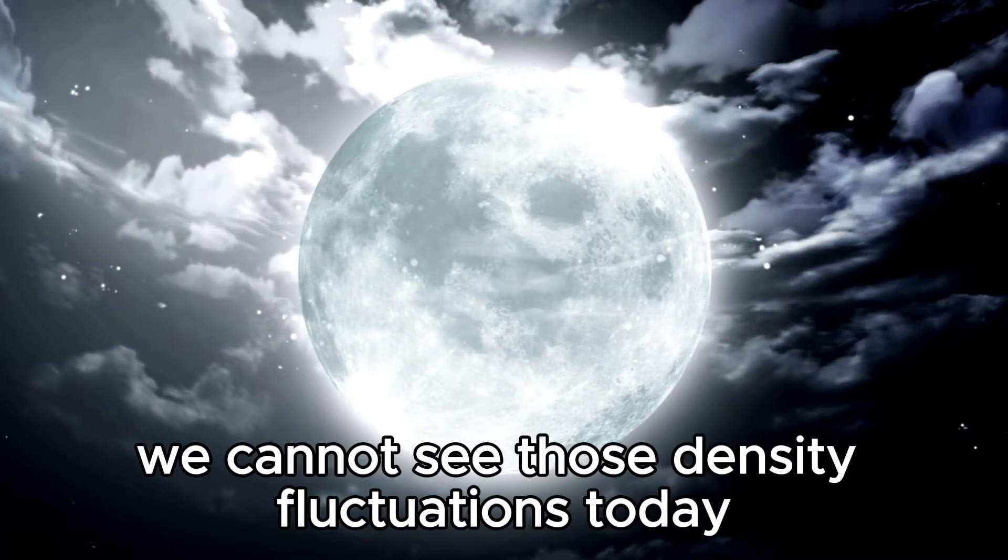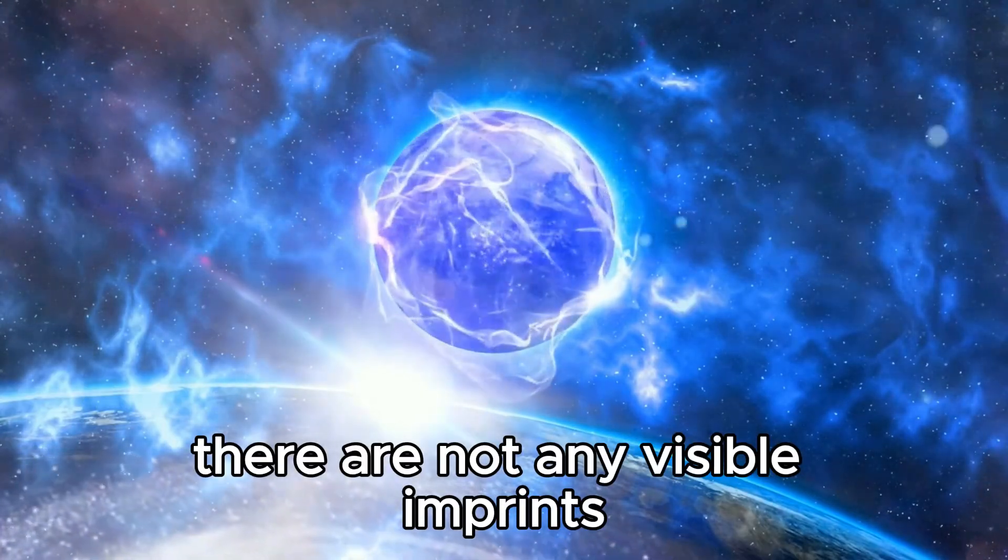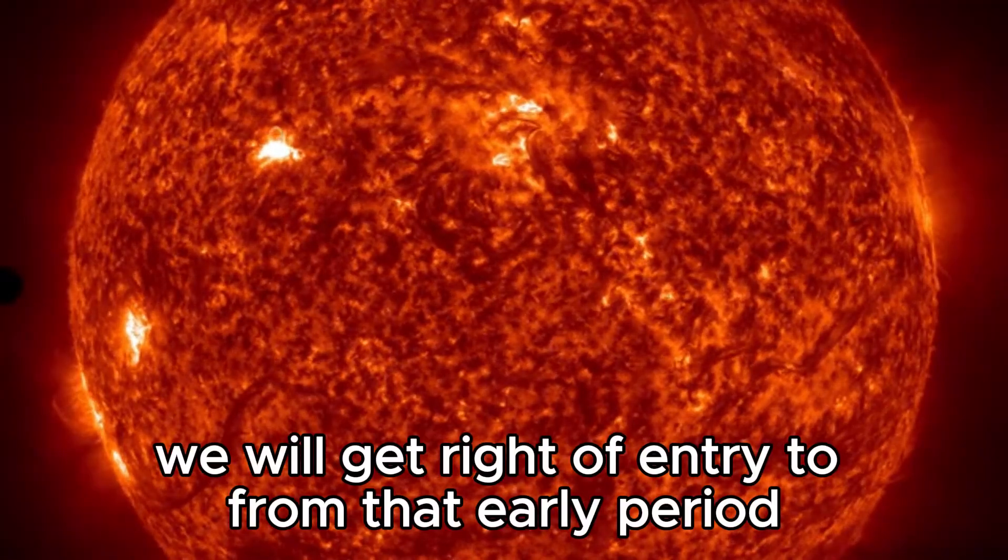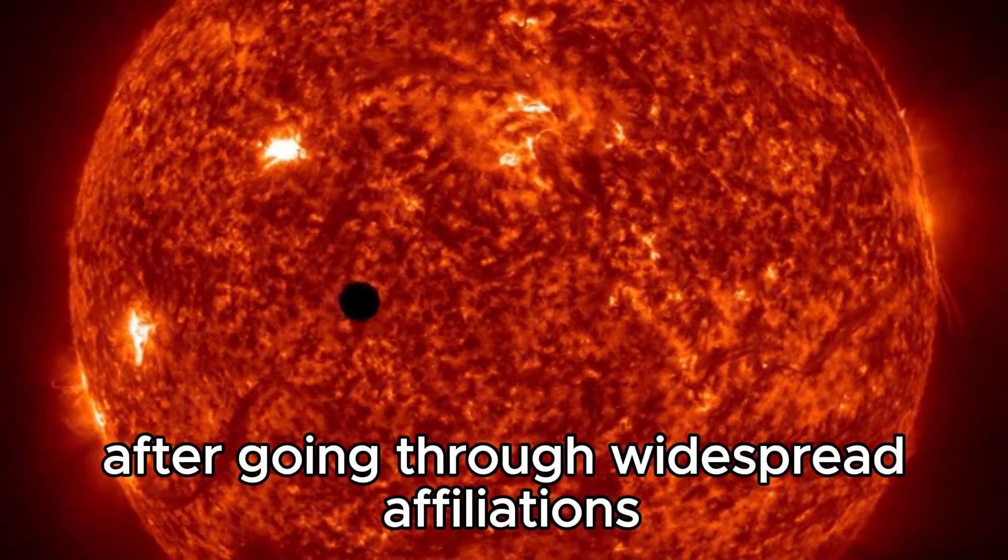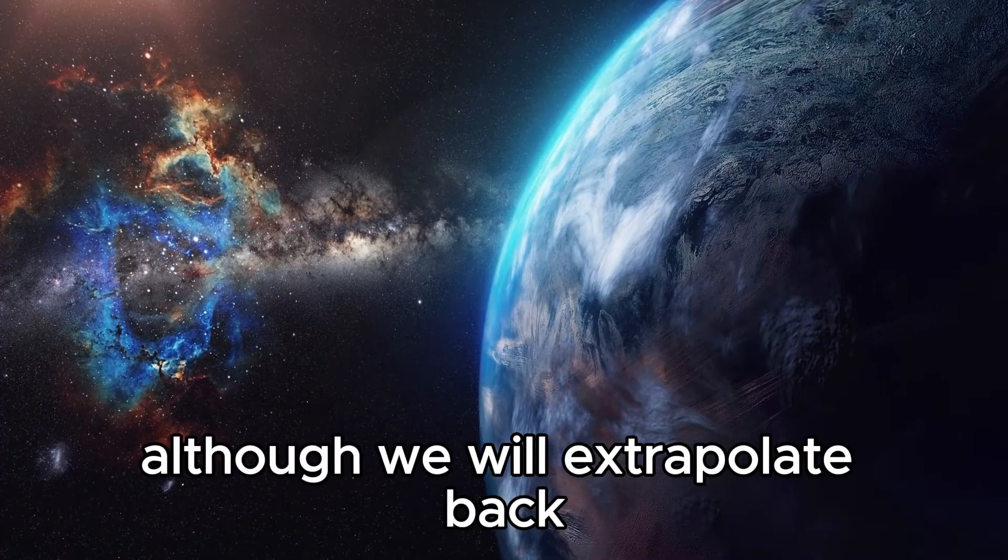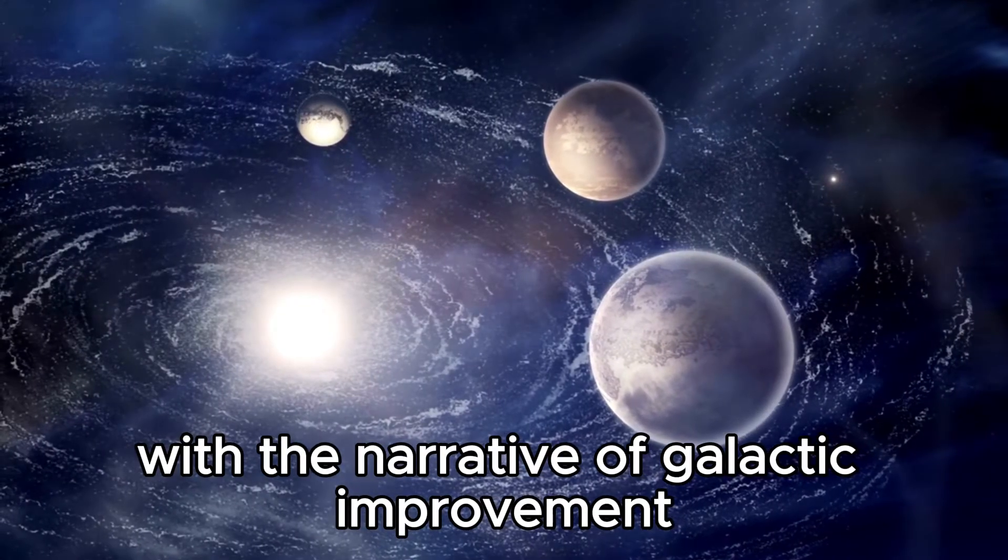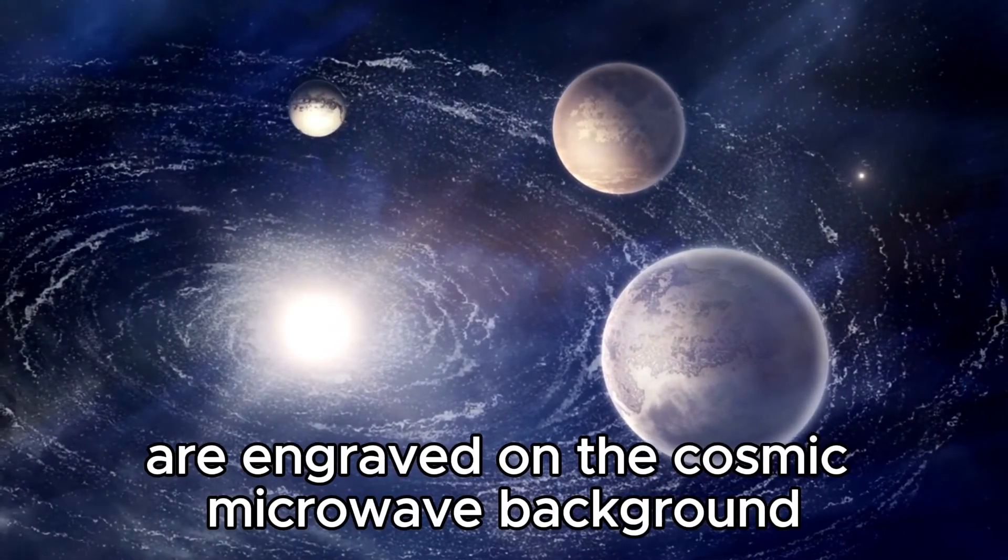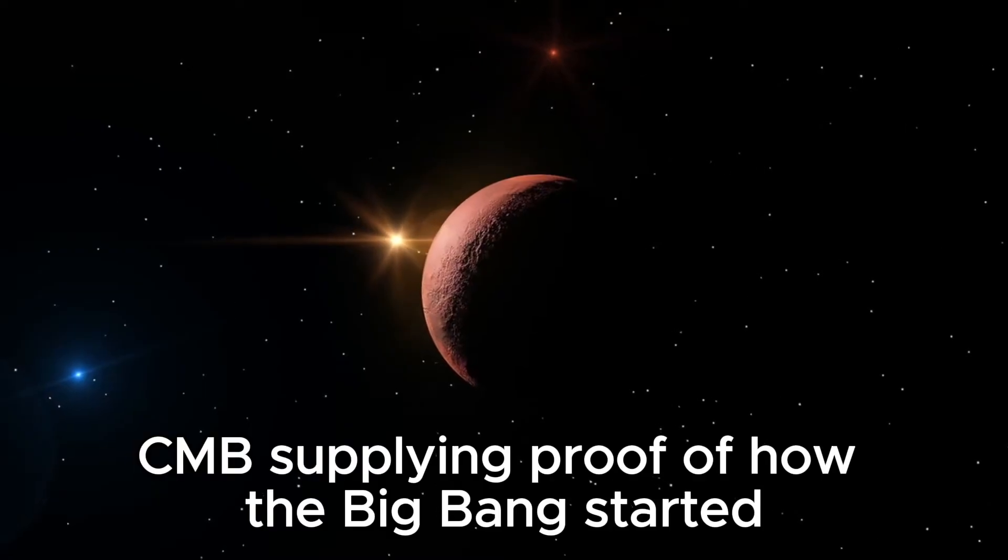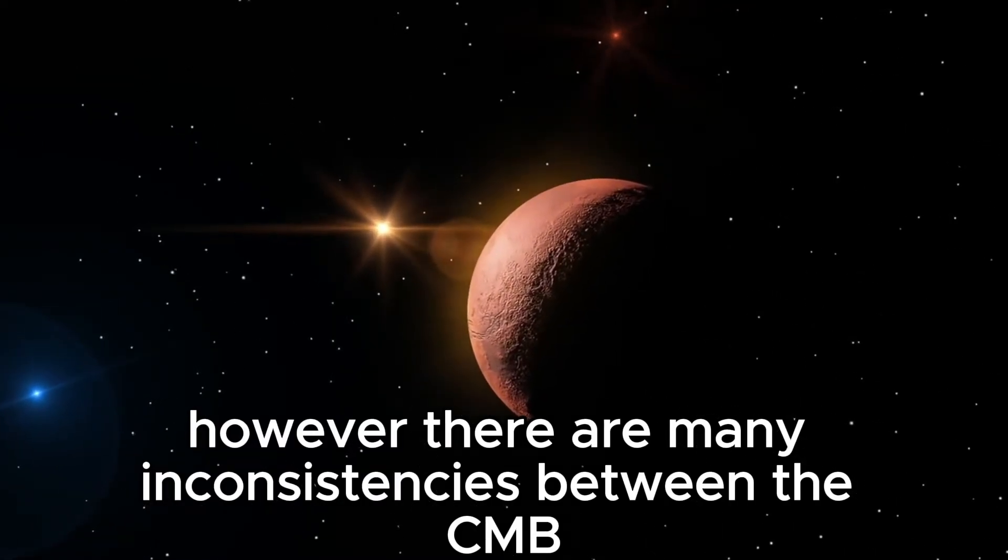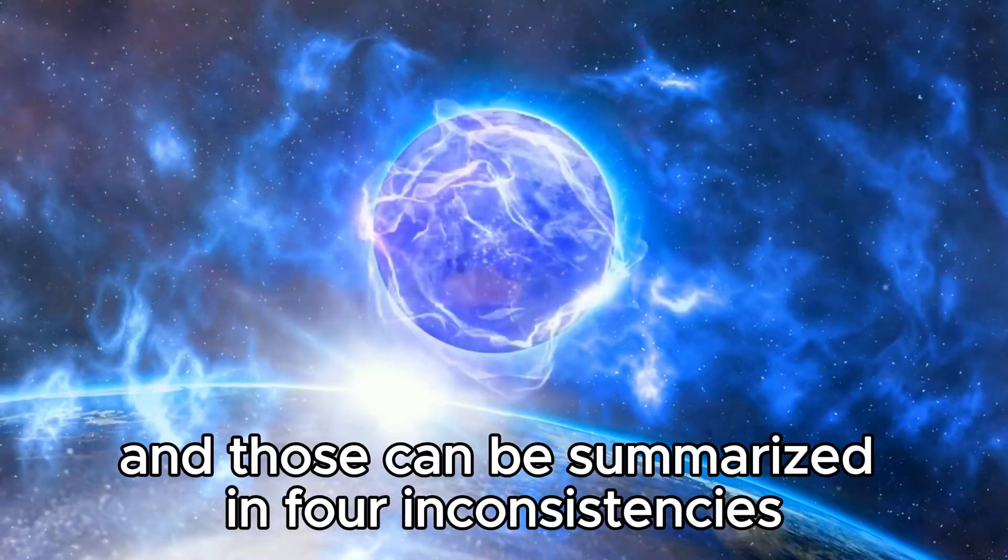We cannot see those density fluctuations today as they were when the universe first of all went through the hot massive bang. There are not any visible imprints we will get right of entry to from that early period. The first observable imprint comes from around 380,000 years later after going through widespread affiliations. Although we will extrapolate back to understand the preliminary density fluctuations, finding something steady with the narrative of galactic improvement. The temperature fluctuations are engraved on the cosmic microwave background, CMB, supplying proof of how the big bang started. However, there are many inconsistencies between the CMB and our present-day model of cosmology. We're missing something and those can be summarized in four inconsistencies.